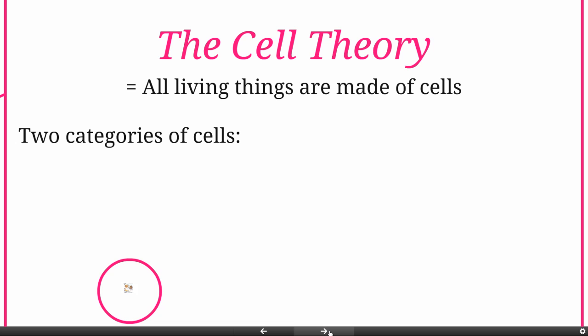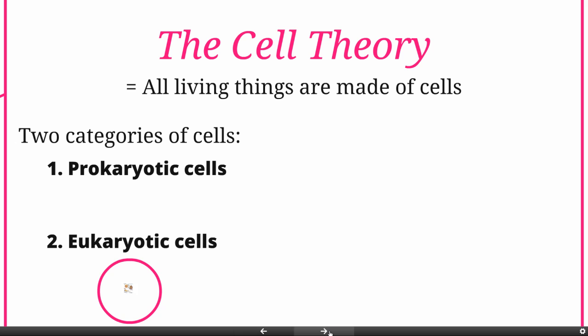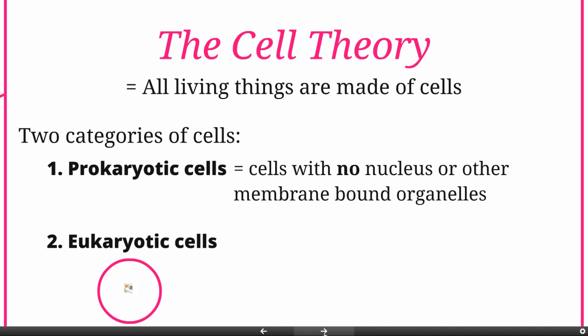We divide cells into two main categories: prokaryotic cells and eukaryotic cells. Eukaryotic should ring a bell — these are organisms that have a true nucleus. Prokaryotic cells are the cells with no nucleus or other membrane-bound organelles. The Latin roots can help us: karyo refers to kernel or nucleus, and pro means before, so these are the 'before nucleus' cells. This includes both the archaea and the eubacteria — bacteria in general.